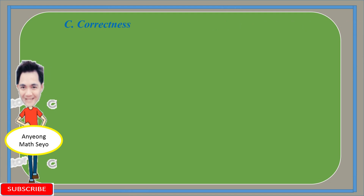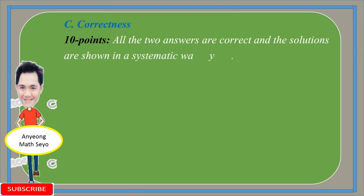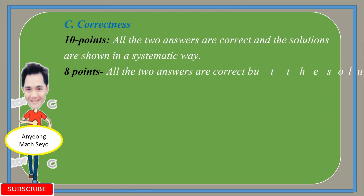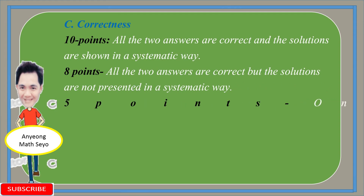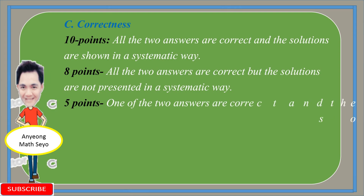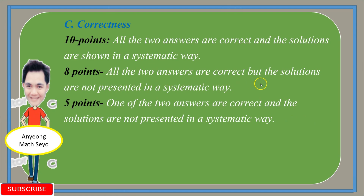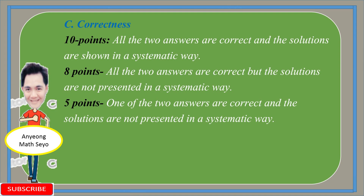The last criterion is Correctness. You will get 10 points if both 2 answers are correct and the solutions are shown in a systematic way. You will get 8 points if both answers are correct but the solutions are not presented in a systematic way. You will get 5 points if only one of the 2 answers is correct and the solutions are not presented in a systematic way. You will get 0 points if you do not pass your output.